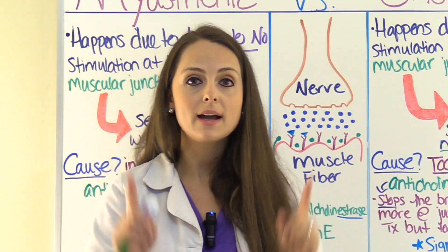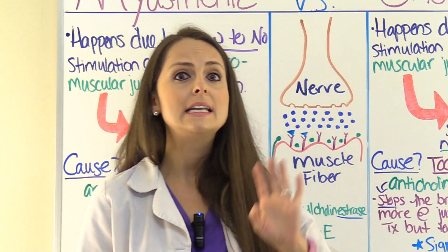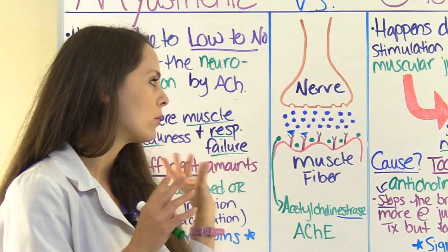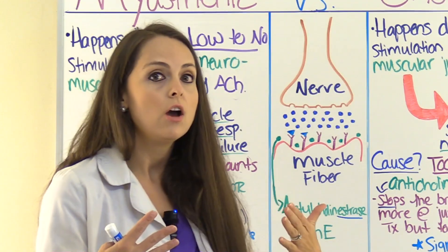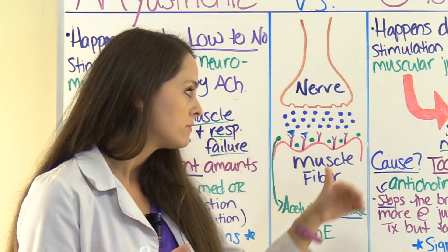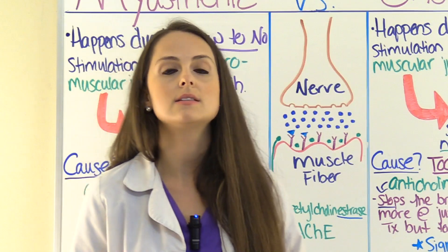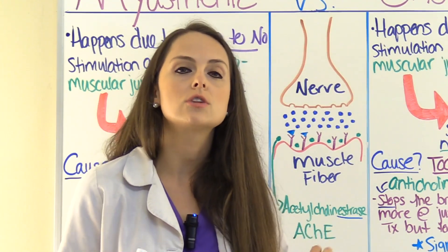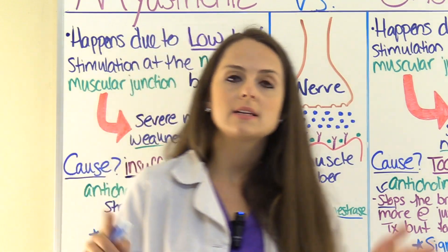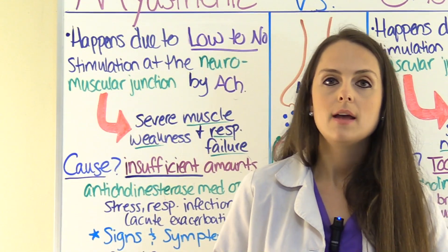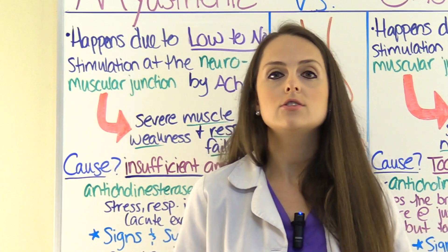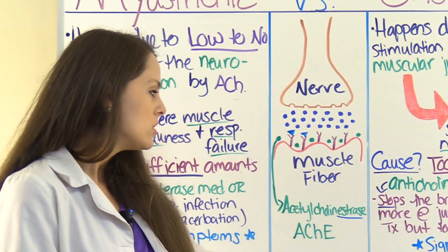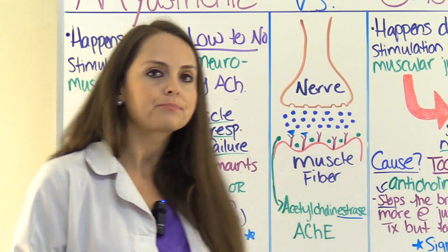In myasthenia gravis, we need to inhibit and slow that down because we don't want all this acetylcholine being broken down — we need it for the receptors that are left that aren't being attacked by the antibody, so we can improve our muscle strength. So patients with myasthenia gravis will be prescribed anticholinesterase medications to prevent this process.